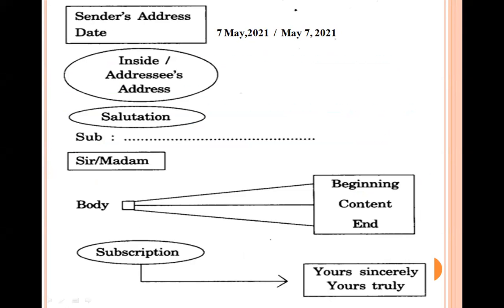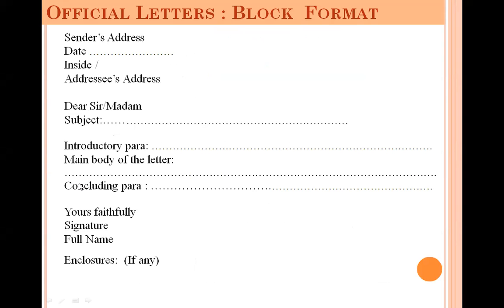The important parts of a letter are: sender's address, inside address (addressee's address), salutation, subject, body, and subscription. In the block format, the letter starts from the extreme left margin — you don't shift paragraphs to the right. Everything starts from the left margin. In block format, no punctuation mark is placed at the end of each line; commas may be used to divide distinct items within a line.